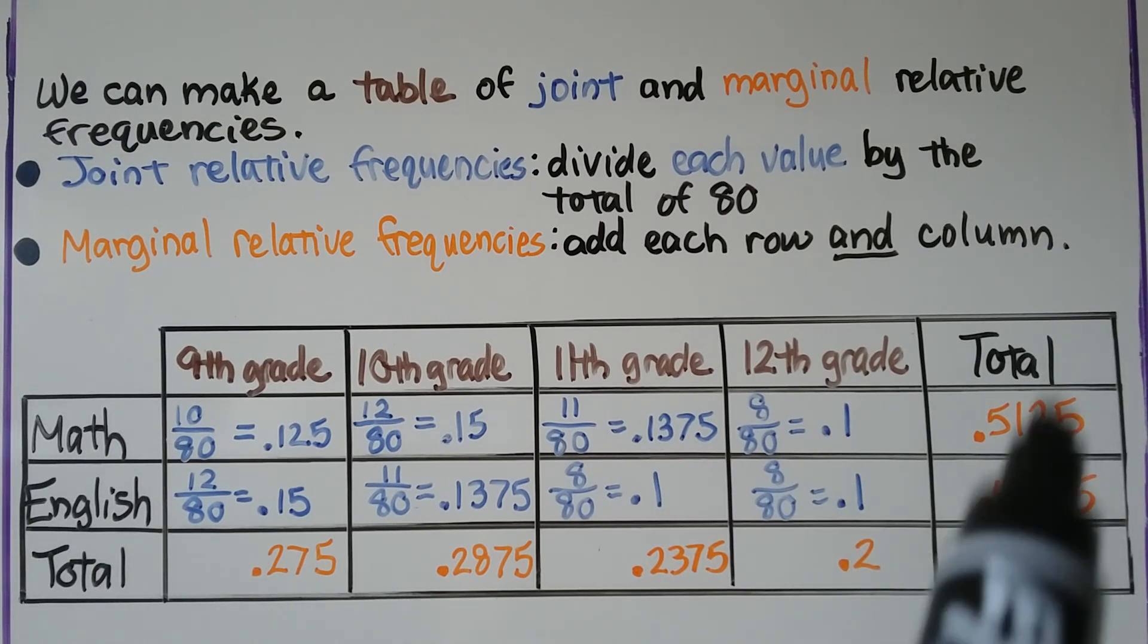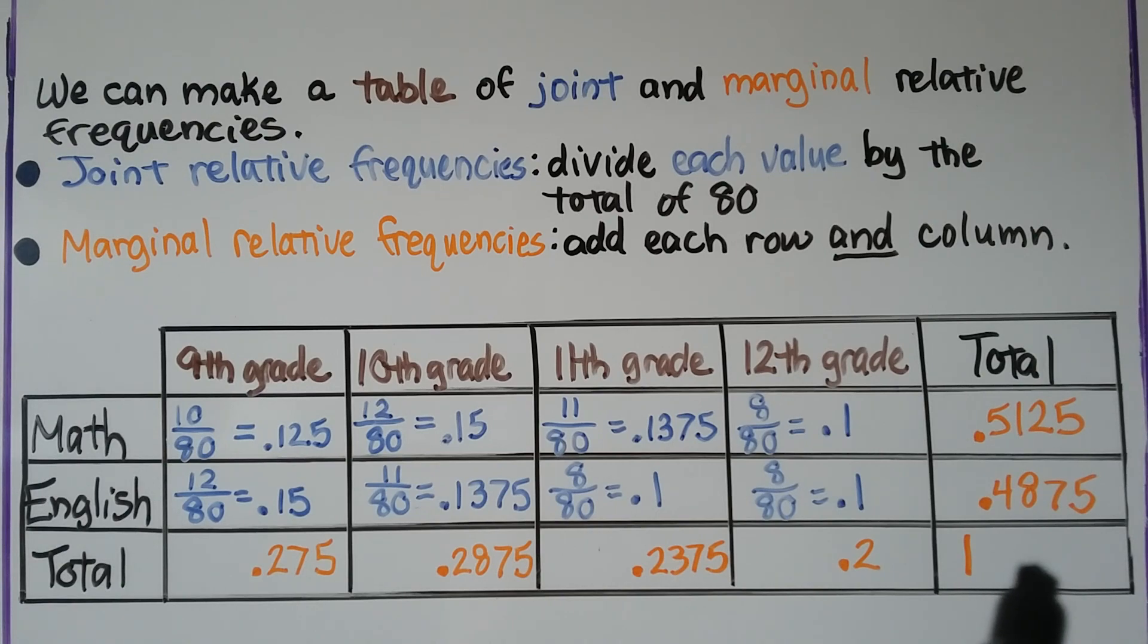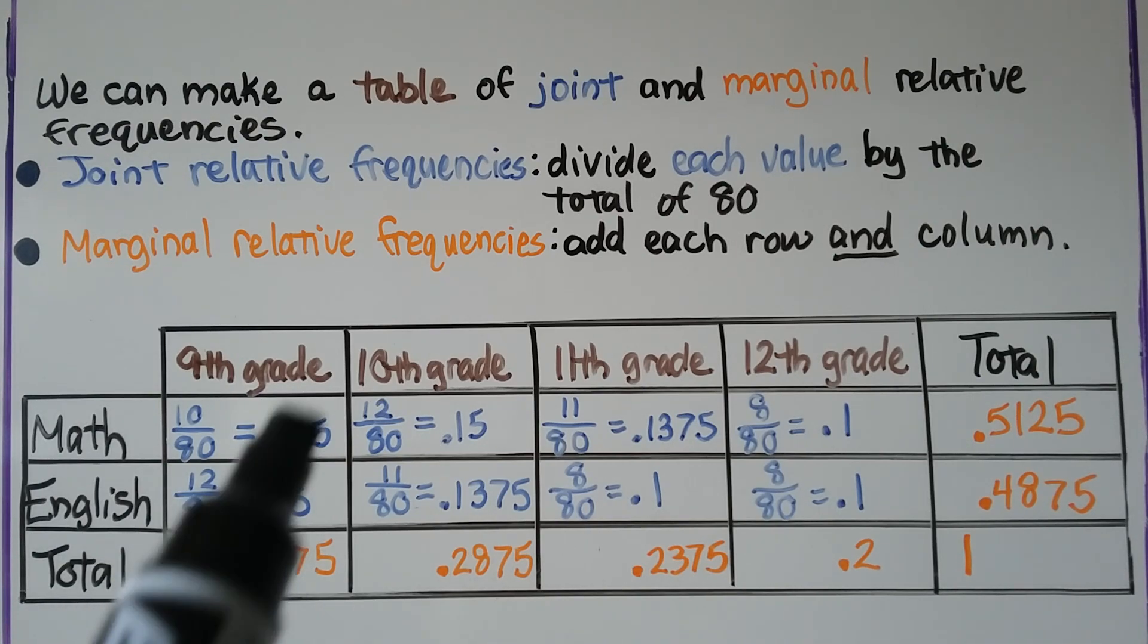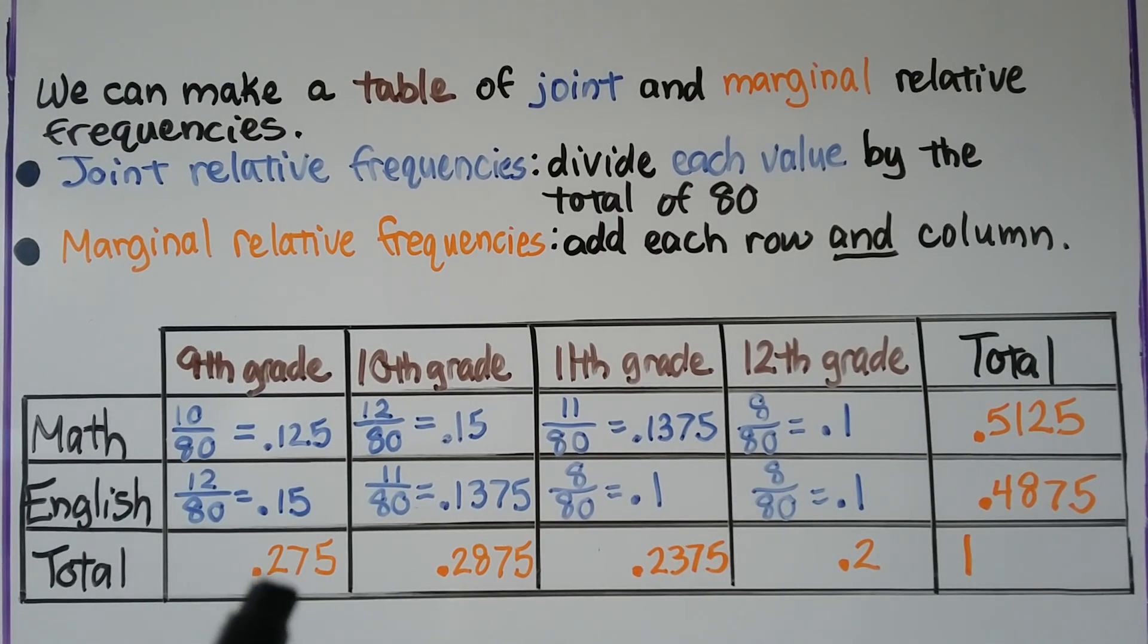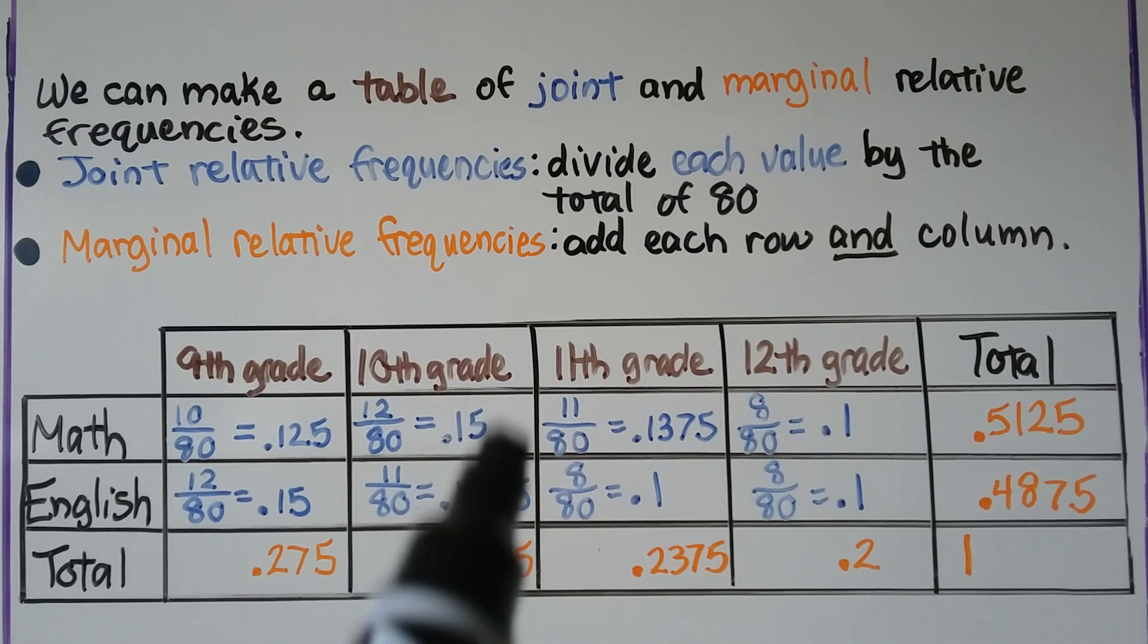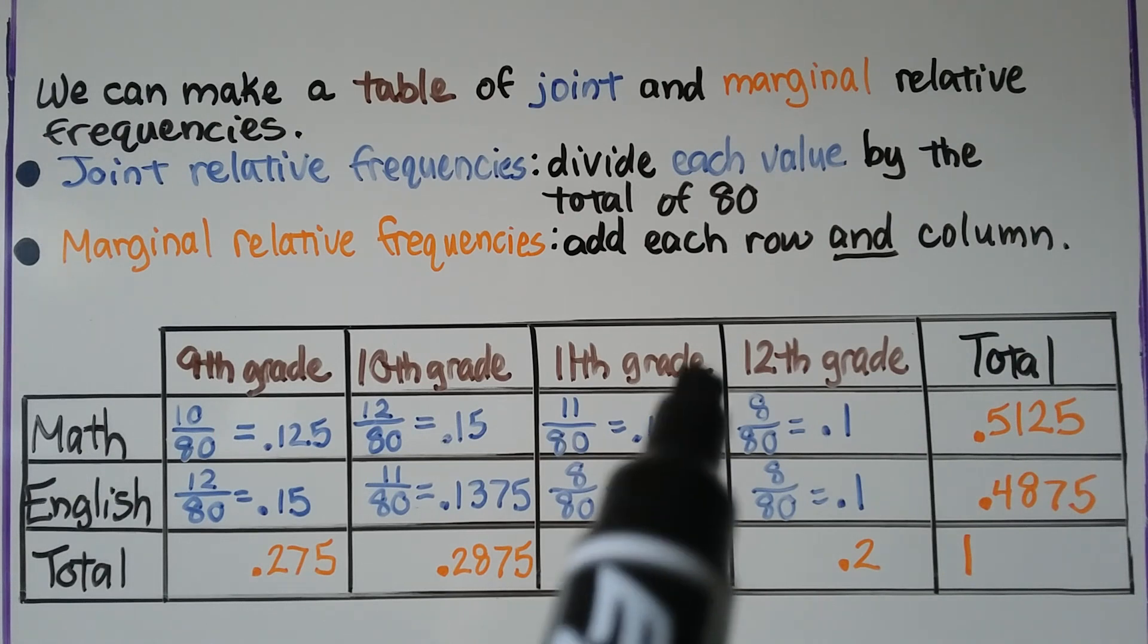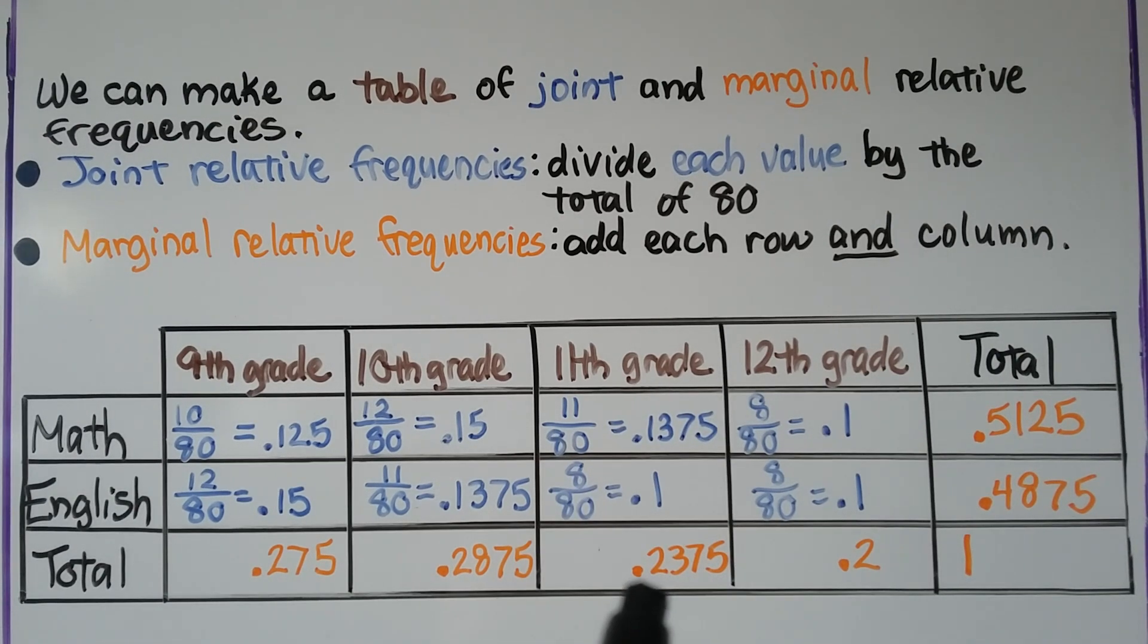We add these two together in this column and we should have a one. If we total these two we should get 0.275. If we total these two we should get 0.2875. This total will be 0.2375 and here we have 0.2. When we add these together in this row we should have a 1. So remember that box should be a 1 for one whole.